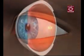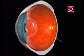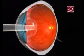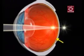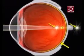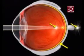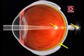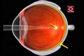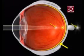Astigmatism is a refractive error in which light rays entering the eye do not focus onto a single point needed for clear vision. Instead, light focuses on two distinct points, neither of which may be on the retina. Where these images focus depends on whether the astigmatism is associated with myopia or hyperopia.